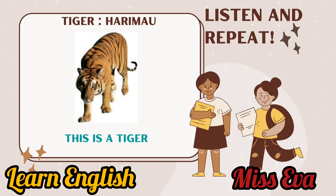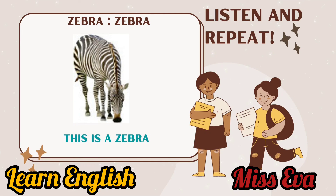Tiger. This is a tiger. Yes, this is a tiger. Zebra. Zebra. This is a zebra. This is a zebra. Repeat. Good job!